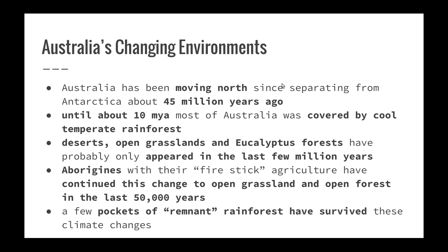So first, let's look at Australia's changing environments. Australia has been moving north since separating from Antarctica, but was never very cold and covered by ice like present-day Antarctica, about 45 million years ago. Until about 10 million years ago, most of Australia was covered by cool temperate rainforests, similar to those now in western parts of Tasmania. Deserts, open grasslands and eucalyptus forests have probably only appeared in the last few million years.